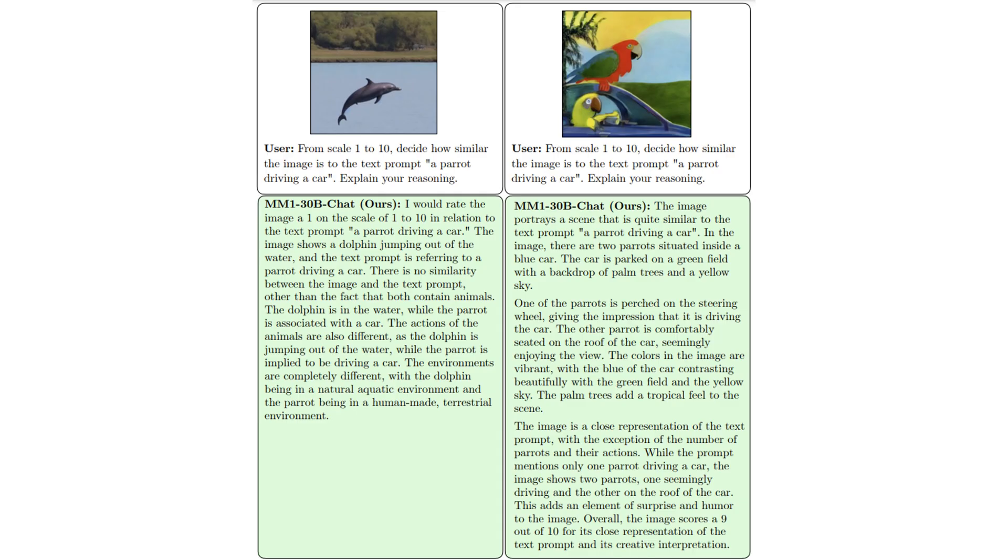In this example, the user presents two images to the MM1 model and asks it, from scale 1 to 10, decide how similar the image is to the text prompt, a parrot driving a car. Explain your reasoning. The MM1 response to the left image is to rate it as 1 on the scale of 1 to 10. This is correct as the image has no similarity to the described prompt. You can read its reasoning. For the right image, the MM1 scores it as 9 on the scale of 1 to 10, which shows its close similarity to the text in the prompt.